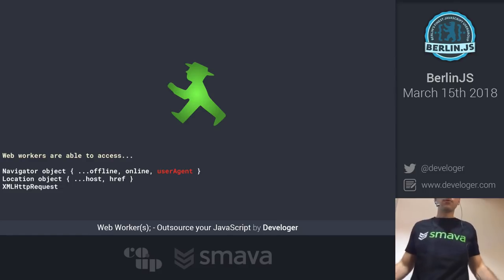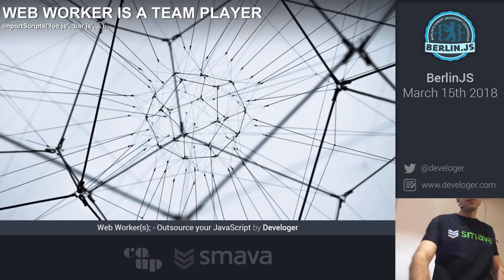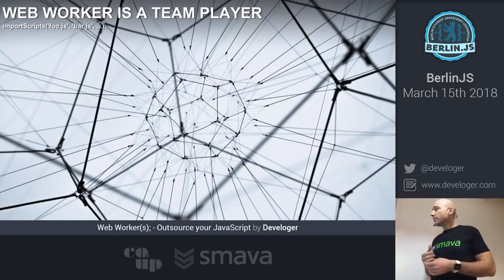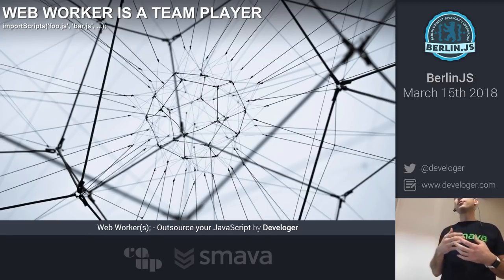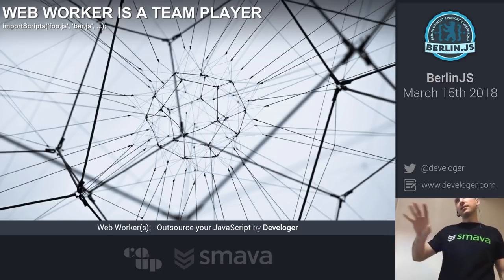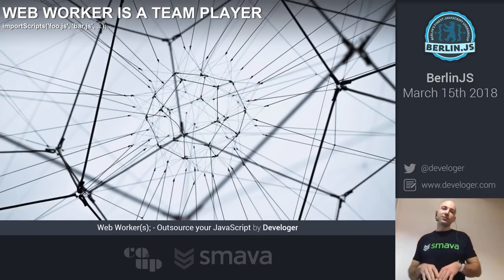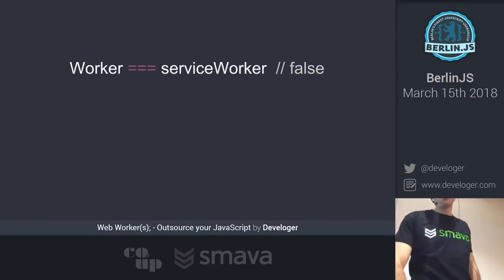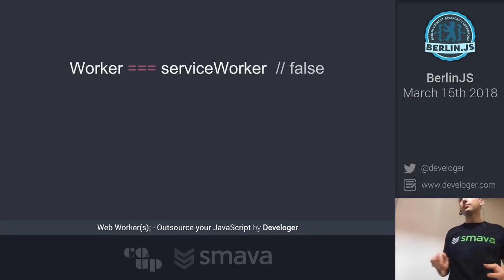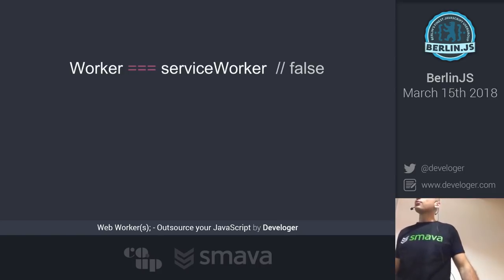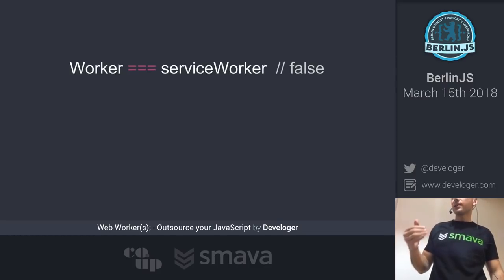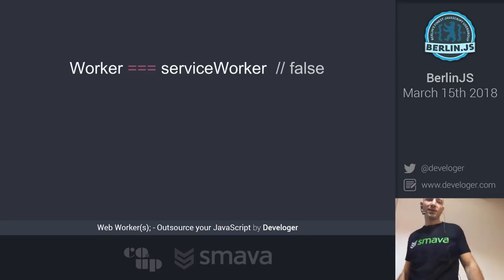In the web worker you can also access XMLHttpRequest, which is important to know — you can do all sorts of data fetching if needed. The web worker is not a standalone thing; within one web worker you can load as many sub-workers as you need, allowing you to horizontally scale your resources. But don't go overboard — there's one misconception: even though web workers won't block your main stack, they still affect device performance because it's still one CPU doing all the work.